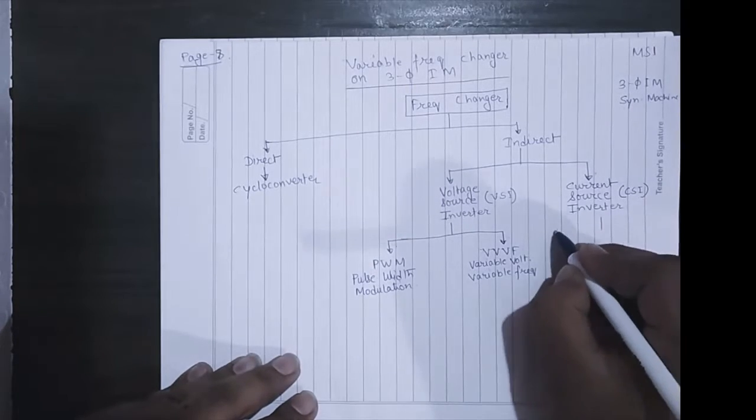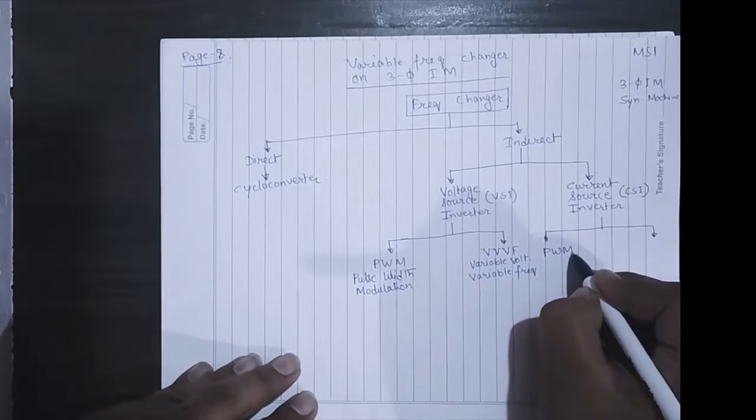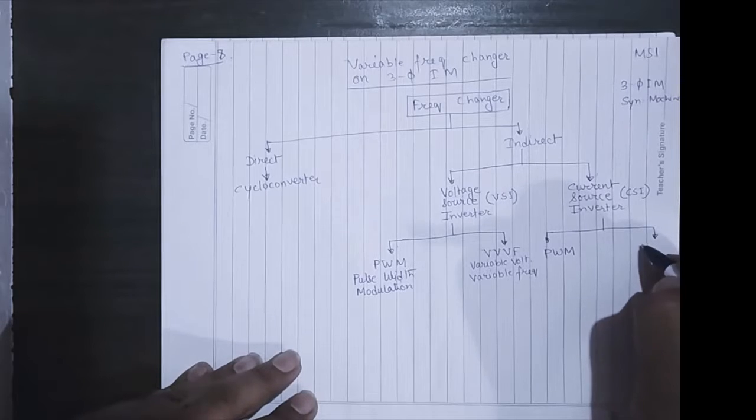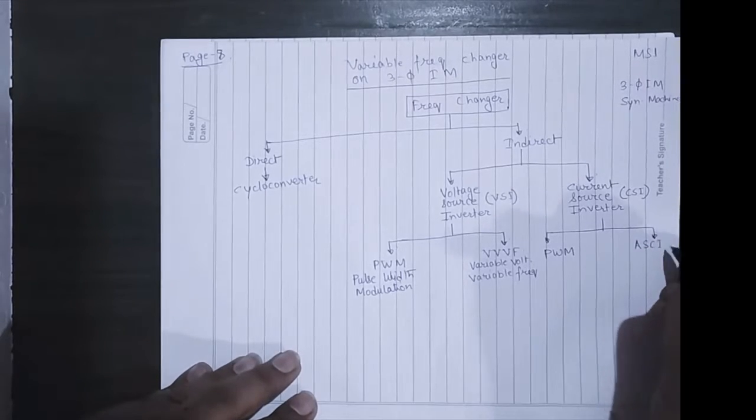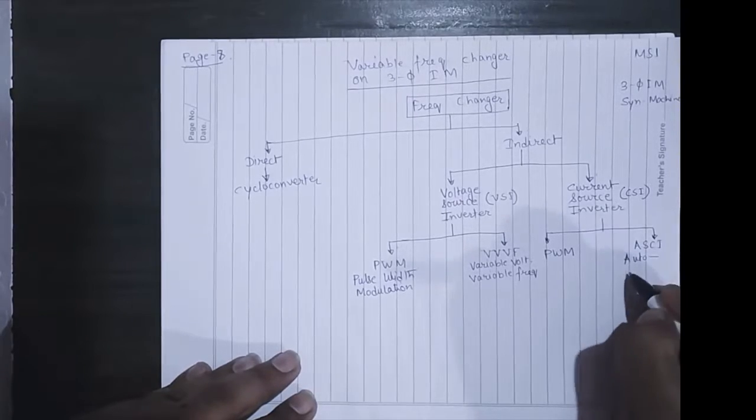Now this current source inverter is also divided into parts: one is same PWM, and the next is ASCI, auto sequential commutated inverter.